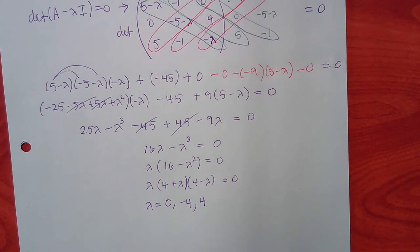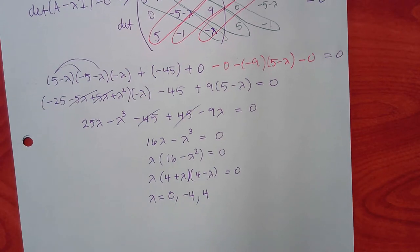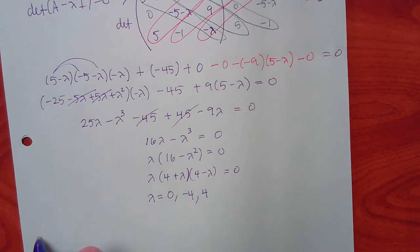Three eigenvalues means three 3×3 matrices to solve — that's why these are ugly. Let's start with lambda equal to zero.